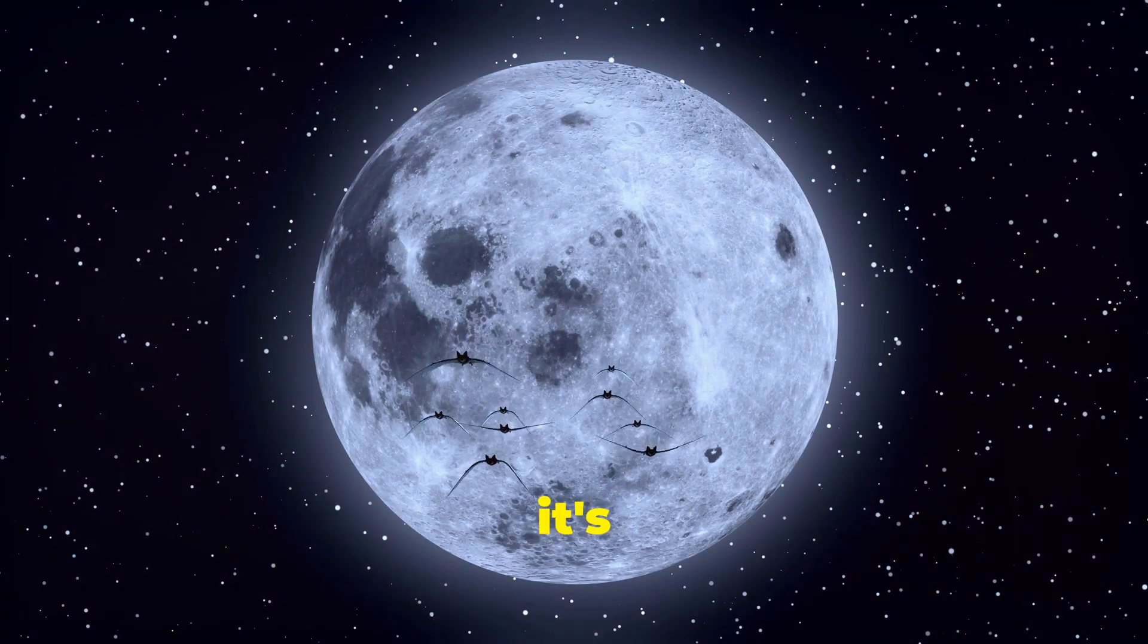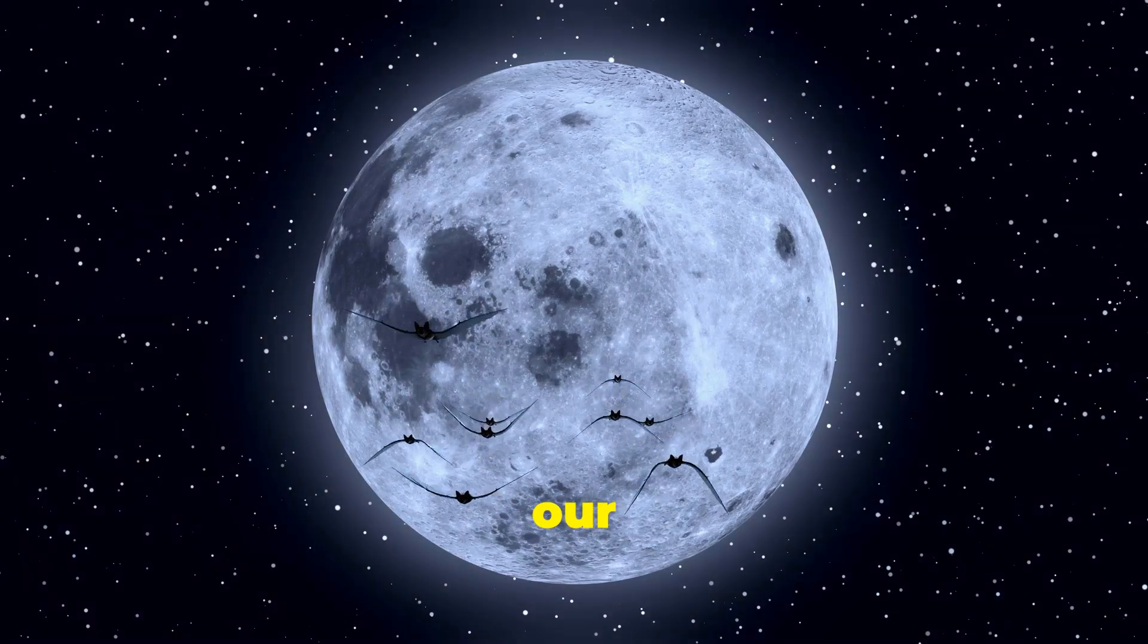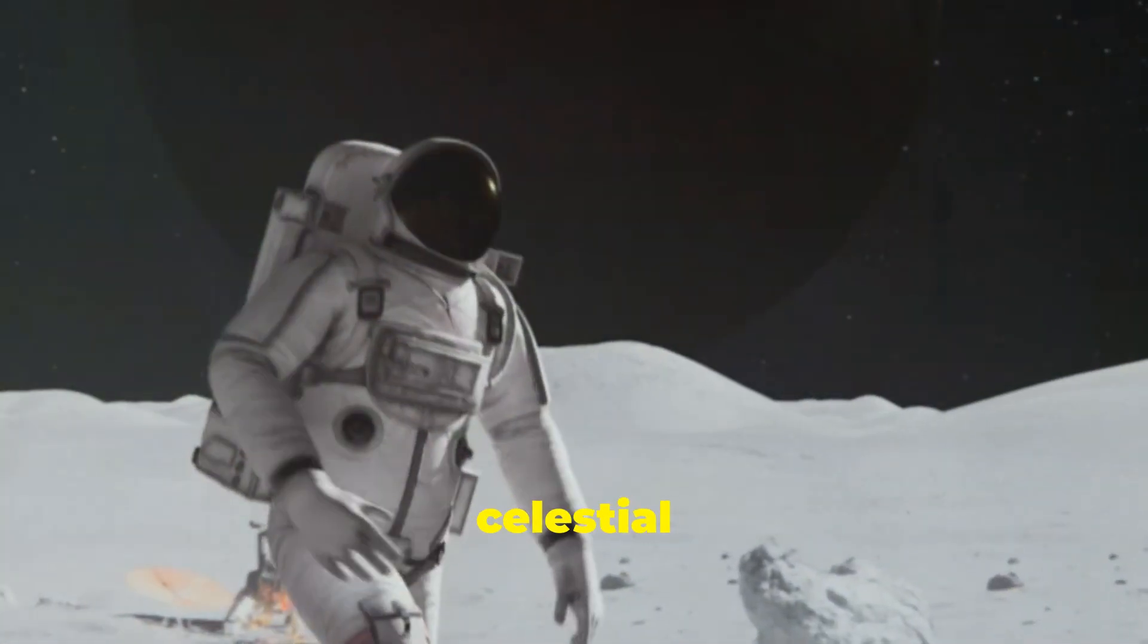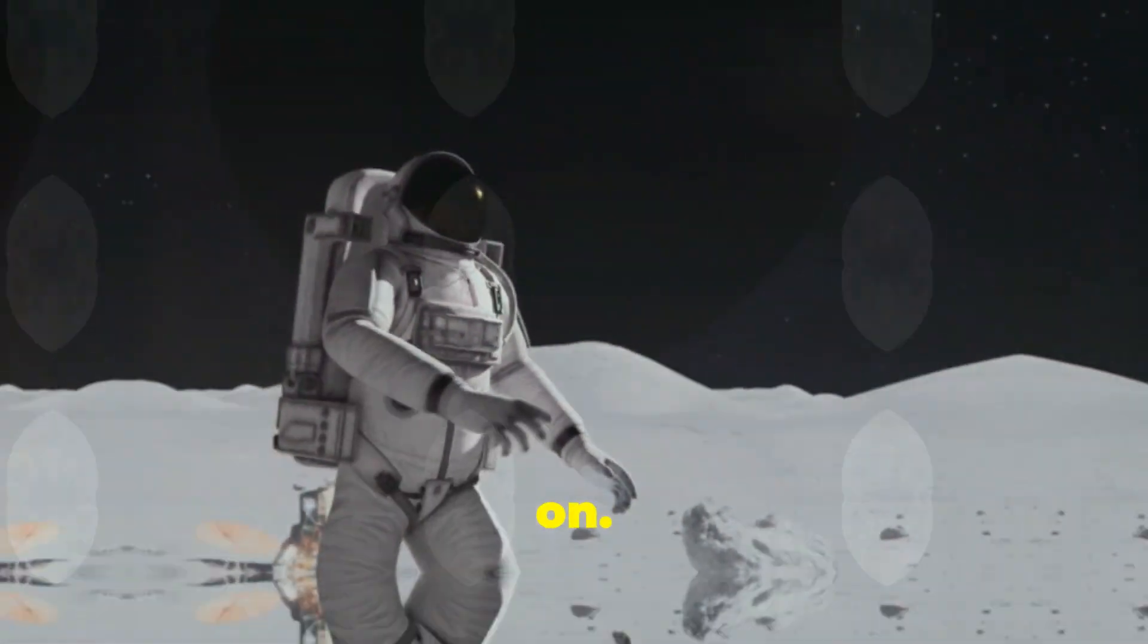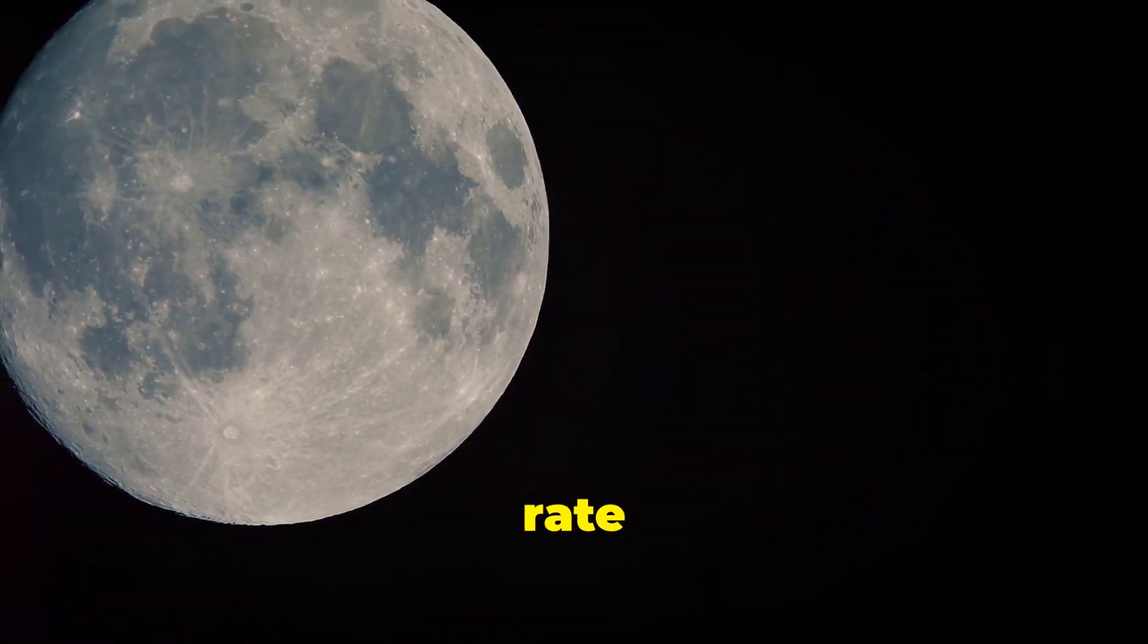Speaking of our moon, did you know it's the biggest and brightest object in our night sky? It's also the only celestial body besides Earth that humans have ever set foot on. Here's another fun fact: the moon is slowly moving away from Earth at a rate of about one and a half inches per year. That's about the same rate your fingernails grow.